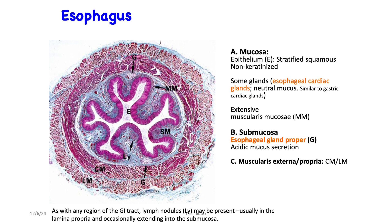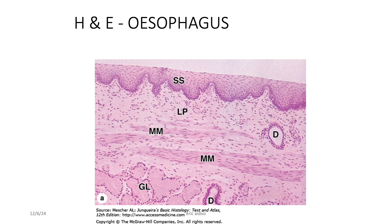The oesophagus follows the same general GI architecture. Its mucosa has a non-keratinized epithelium and contains oesophageal cardiac glands, along with an extensive muscularis mucosae. The submucosa contains oesophageal glands proper. In a histological micrograph you can see the stratified squamous surface epithelium, the loose connective tissue of the lamina propria, and smooth muscle of the muscularis mucosae. The glands with their ducts are visible in the submucosa, because the muscularis mucosae marks the limit of the mucosa.